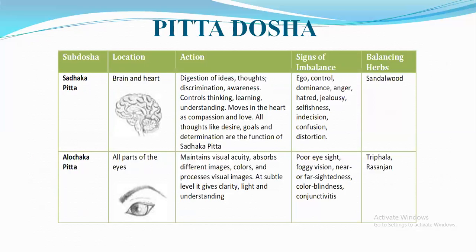Next is Alochak Pitta, located in all parts of the eyes. Its actions include maintaining visual activity, absorbing different images, colors, and processing visual images at a subtle level. It gives clarity, light, and understanding. Signs of imbalance include: poor eyesight, foggy vision, near or farsightedness, sadness, color blindness, and conjunctivitis. The balancing herb is Triphala with Rasanjan.